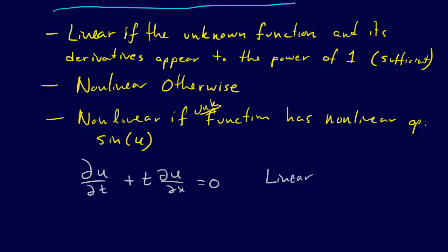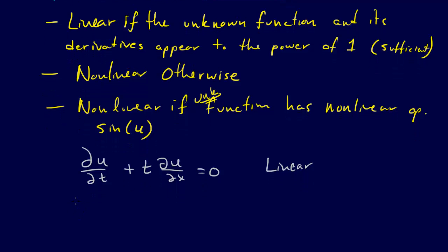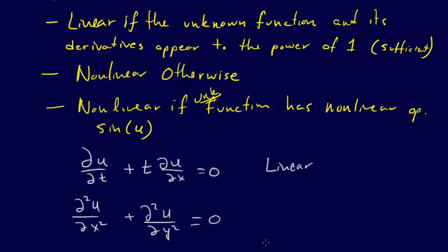Let's get another example. What if we have ∂²U/∂X² plus ∂²U/∂Y² equals 0? Is this linear or nonlinear? This is linear, because again we don't have U, the unknown function, appearing to a power greater than 1. This is a second derivative, but that's fine, and we don't have any sines or anything like that in here. So this is linear.